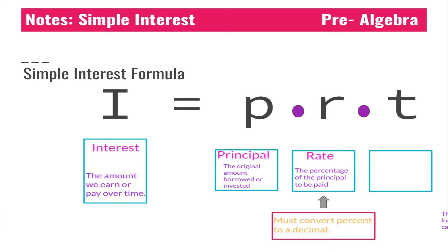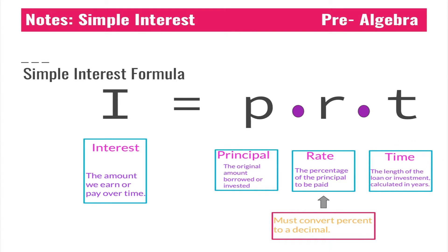Our last variable is T, which stands for time — the length of the loan or the investment calculated in years. It's very important that if we get any problems that are listed in months, we convert them to years first before completing our problem.